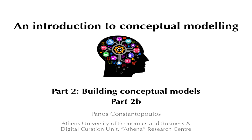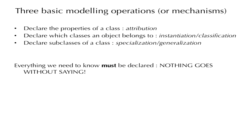We have seen what the elements of models are; now we will turn to the mechanisms or operations used to actually build models. There are three basic modeling operations: to declare the properties of a class, which is called attribution; to declare which classes an object belongs to, which is called instantiation or classification; and to declare subclasses of a given class, which is called specialization or generalization.